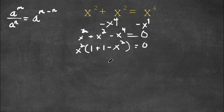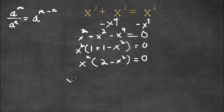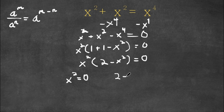Now 1 plus 1 is 2, so now we have x squared times 2 minus x squared is equal to 0. And now this gives us two equations. Our first equation is x squared is equal to 0, and our second equation is 2 minus x squared is equal to 0.